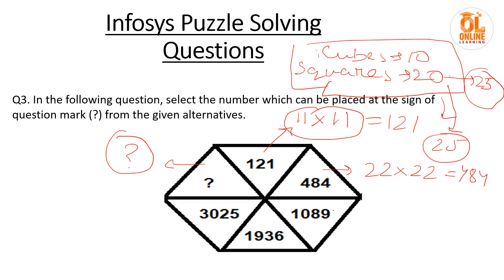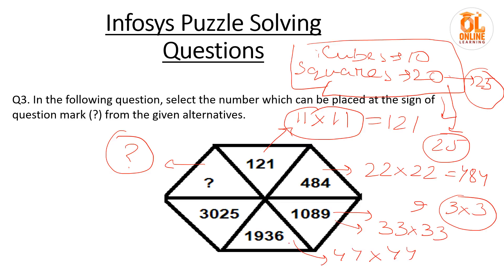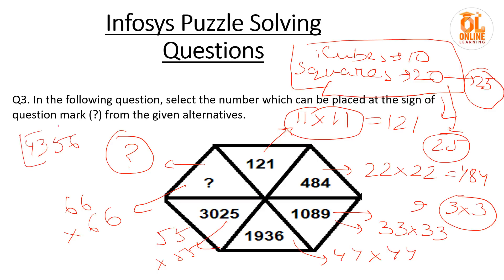The unit digit is 9 — you can get a unit digit of 9 by 3 into 3 only. So you can check it is 33 squared, that is 33 into 33. Then you can get that it would be 44 into 44, it would be 55 into 55, then your answer should be 66 into 66. 66 into 66 is 4356 — that will be your answer. So if you know squared values up to 25 and cube values up to 10, you can easily find the solution to most questions.